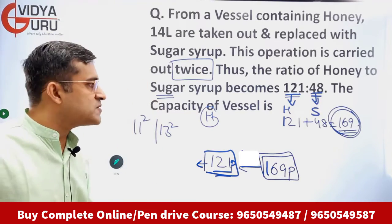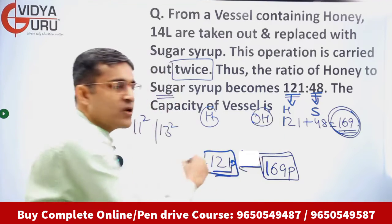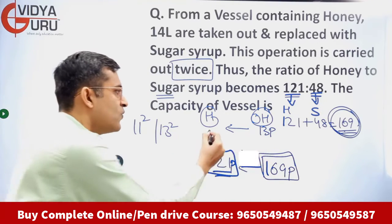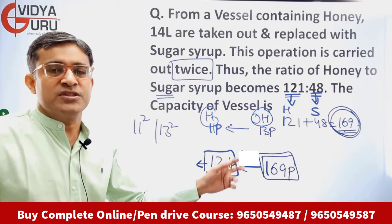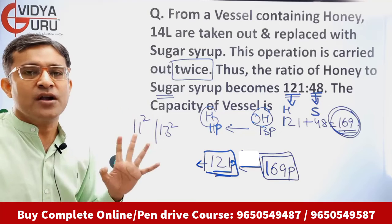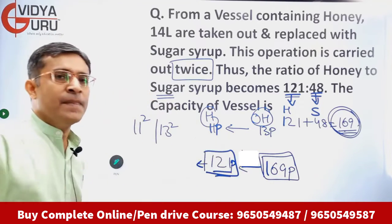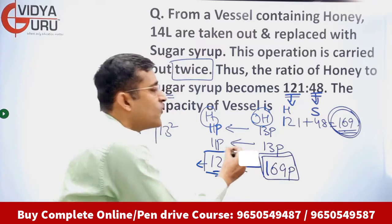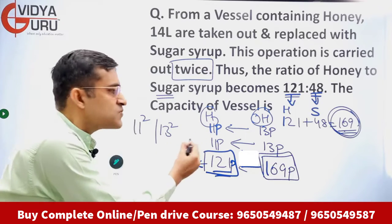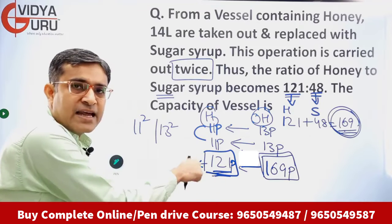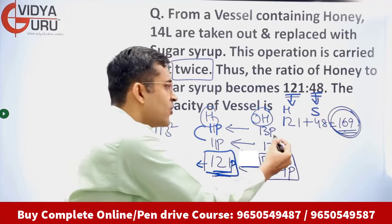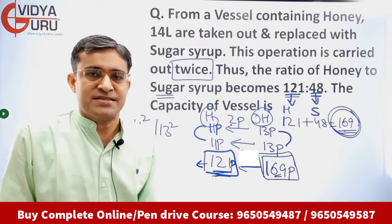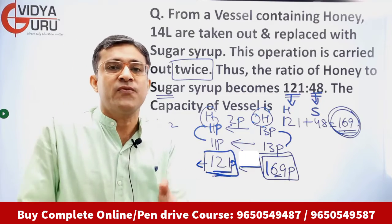The operation was performed two times, so original honey was 13 parts. Each time, 13 parts become 11 parts — a change of 2 parts. Honey left is 11×11 = 121 parts, and original honey was 13×13 = 169 parts. Every time, 2 parts of honey get replaced with sugar.